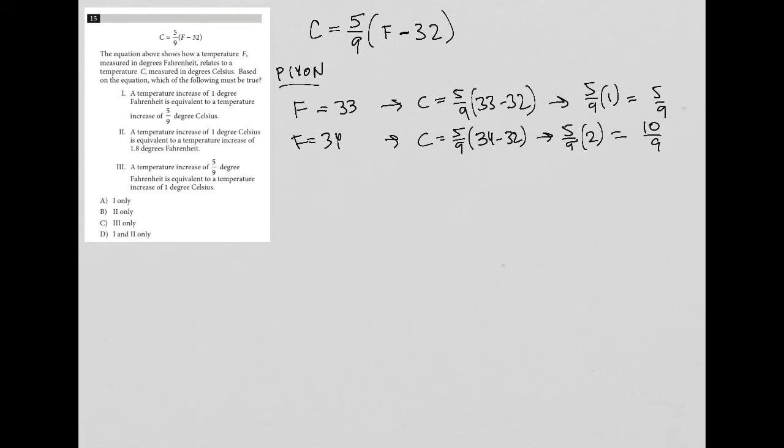So the question was, or the answer choice says, is equivalent to a temperature increase of 5/9? Yeah, so 5/9 increased by 5/9, or kind of plus 5/9, does in fact equal 10/9. So when I increase my Fahrenheit number by one, I got a plus 5/9 on the C.